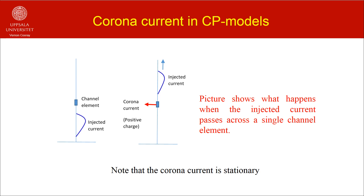We have seen that in current generation models, corona current travels downwards, and in current dissipation models it travels upwards. What about the corona current in current propagation models? Consider a channel element in a negative return stroke. When the injected current reaches this element, some positive charge will be deposited on the channel element. As a result, the current leaving the element will have slightly smaller amplitude than the one that entered. The deposition of positive charge can be thought of as a corona current that moves into the corona sheath — that is, the corona current in these models does not travel along the return stroke channel. It is a stationary corona current.